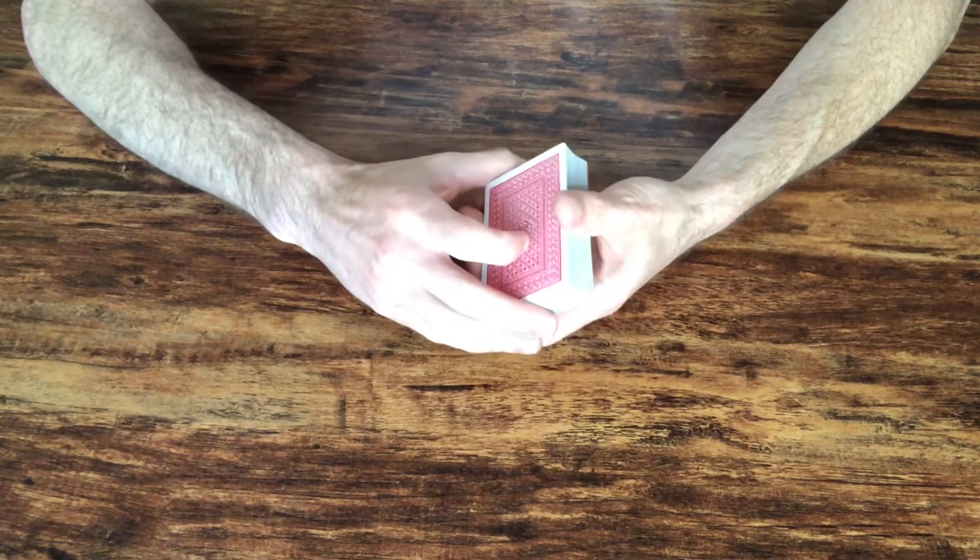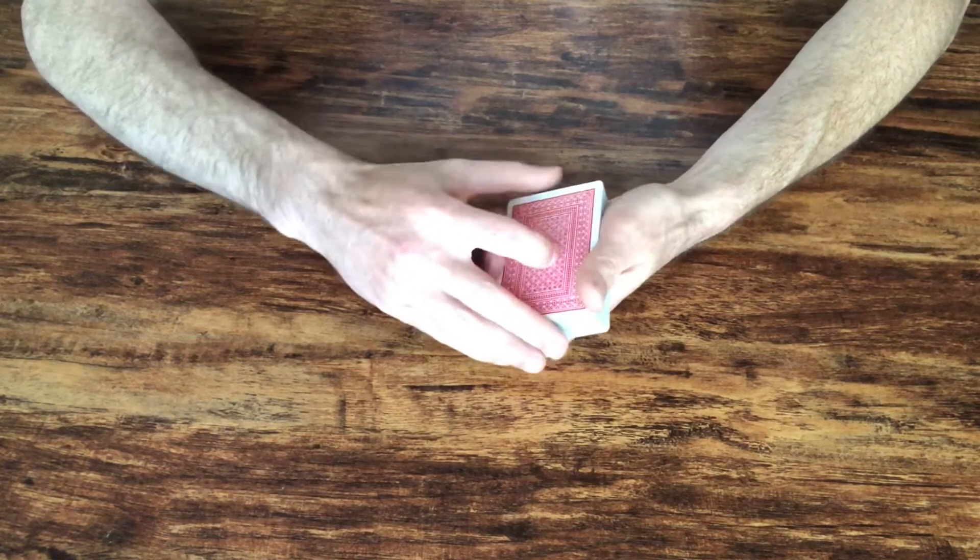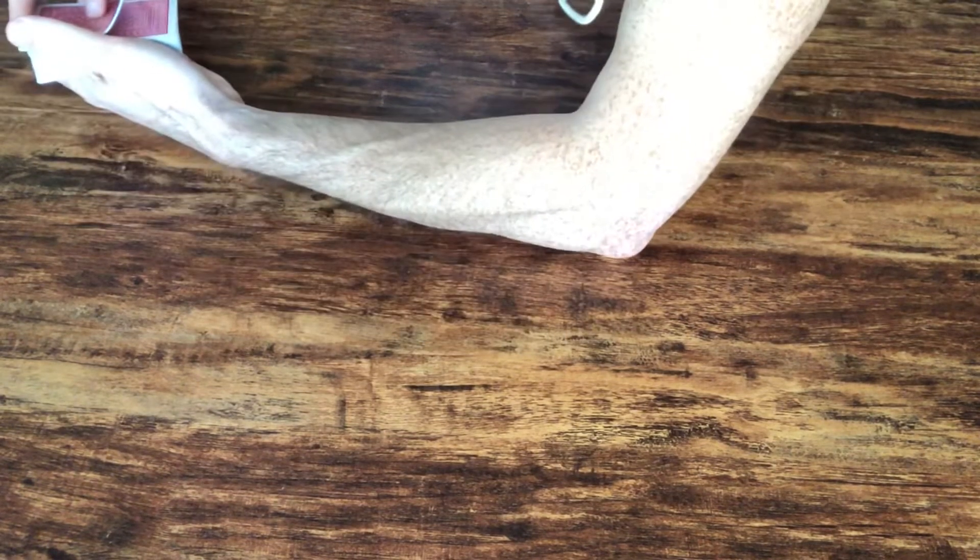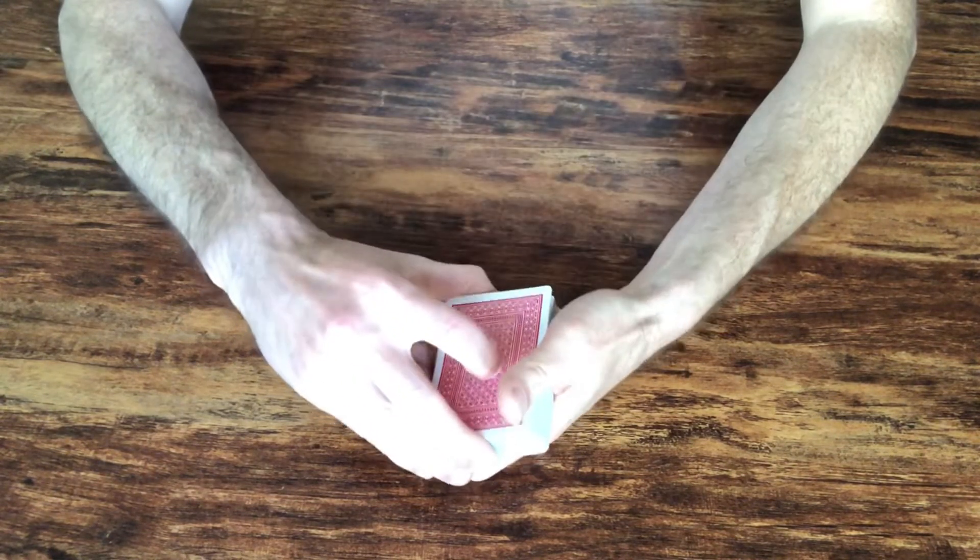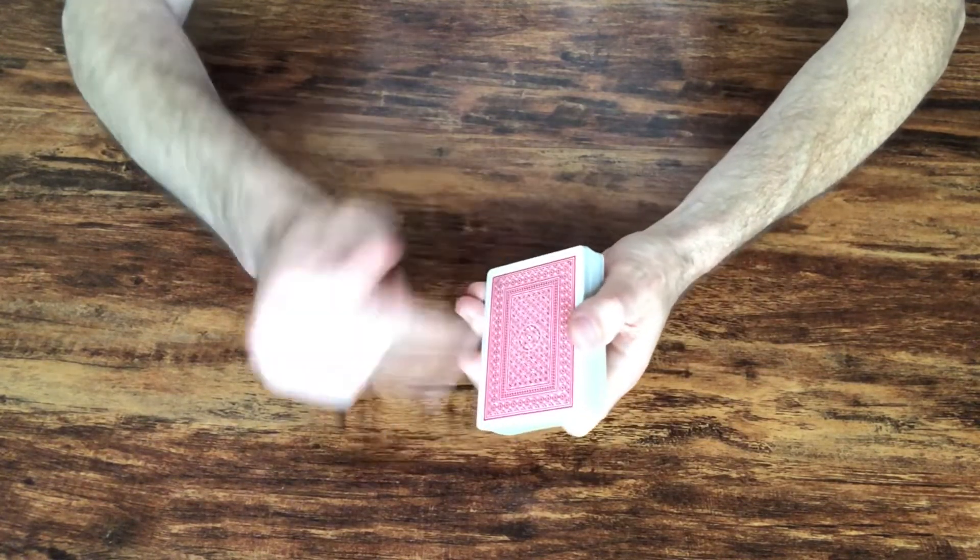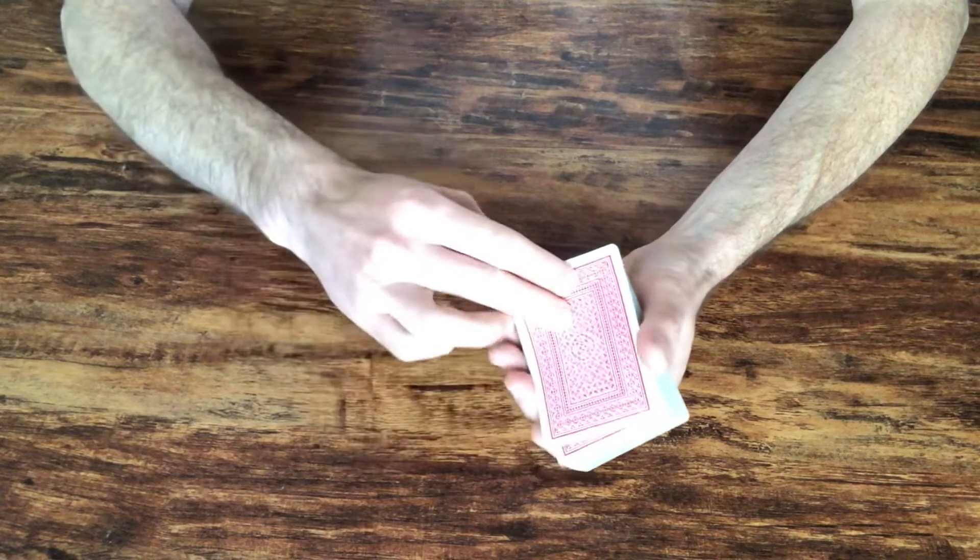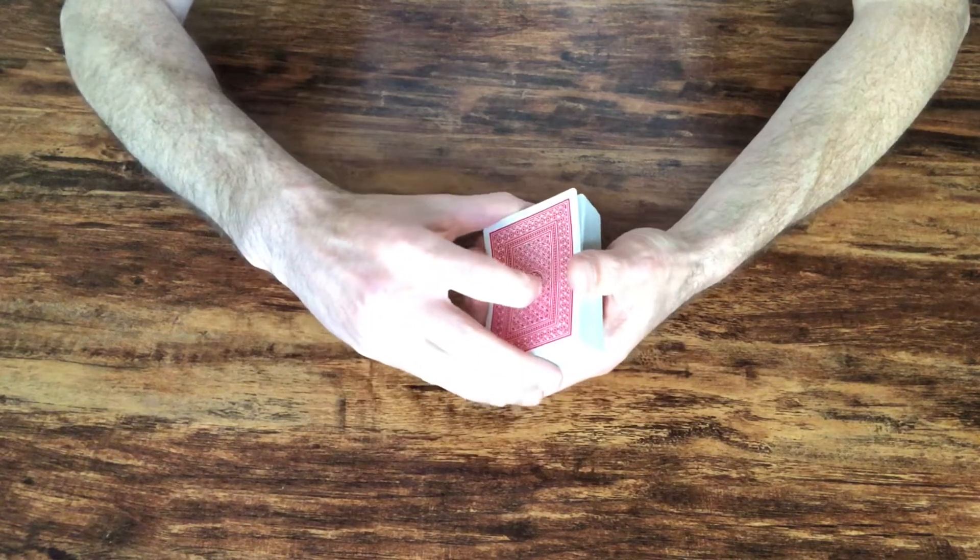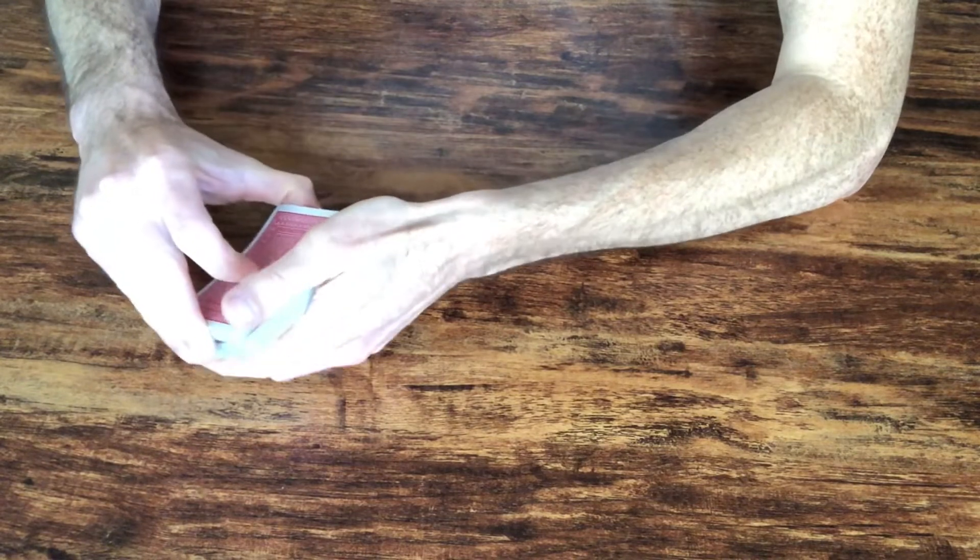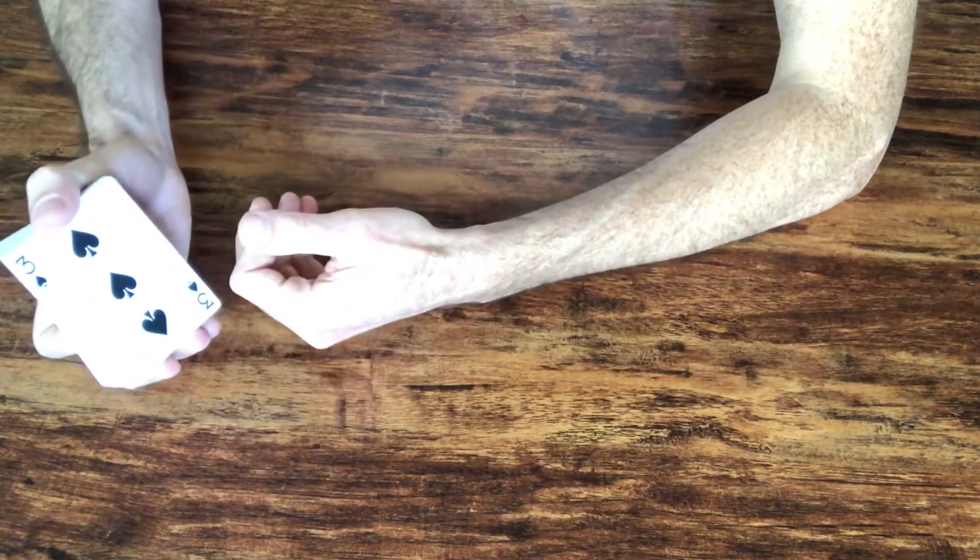One last way you can also take cards off the top or bottom involves the double undercut, and you're going to riffle off, you're going to count up the number of cards that you need. So in this case there's one, two, three. I'm going to catch a pinky break. And then if you double undercut at that break, it will transfer those cards to the bottom. That makes sense. So like let's say I want to take that card, put it on the bottom. If I'm just going to do one card, I'll get a pinky break, transfer it to a thumb break, do a double undercut. That card has now gone to the bottom of the deck.